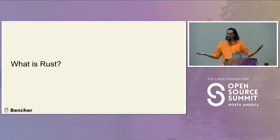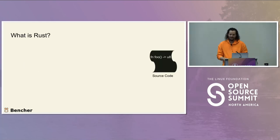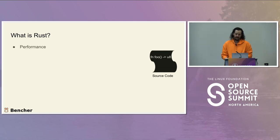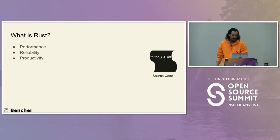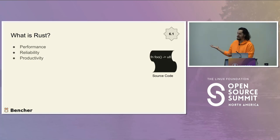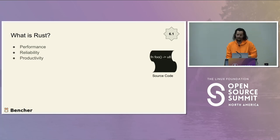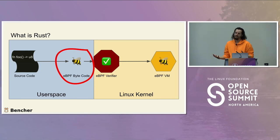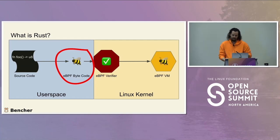And what is Rust? Rust is a programming language, one that I have fallen in love with. It is designed for performance, reliability, and productivity, making it a great language to do systems programming in. Now, a lot of you may have heard that as of kernel 6.1, Rust was added to the kernel. But we are not going to be talking about that today. We're going to be talking about creating eBPF bytecode with Rust — not working on the Linux kernel in Rust. Different things.